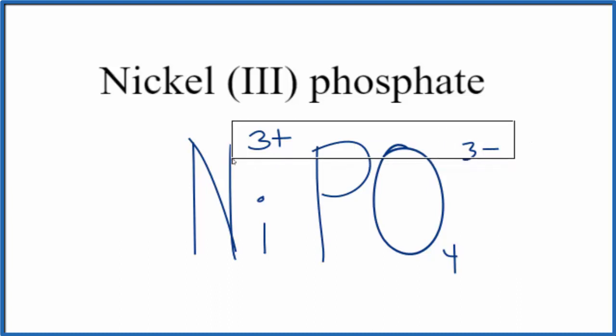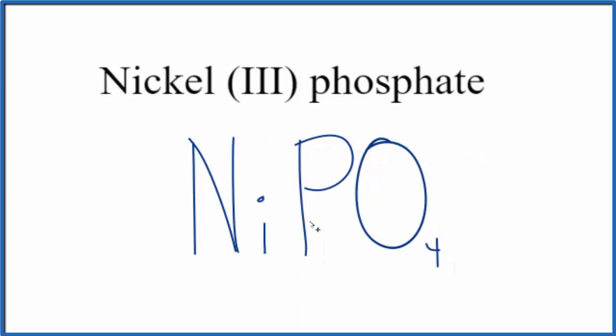So this is the formula for nickel(III) phosphate: NiPO4. This is Dr. B, and thanks for watching.